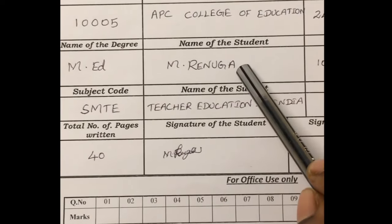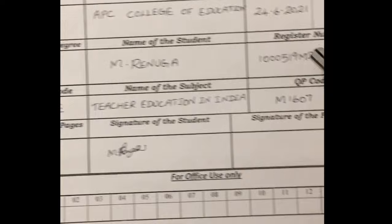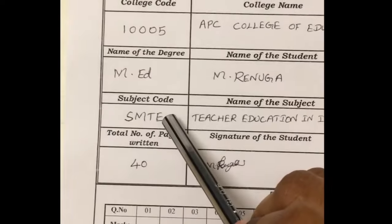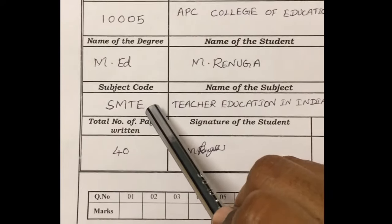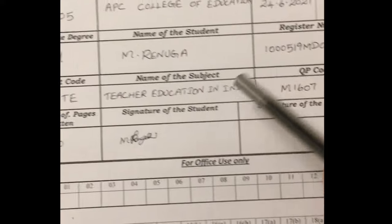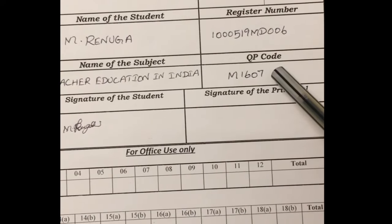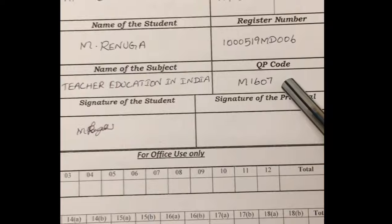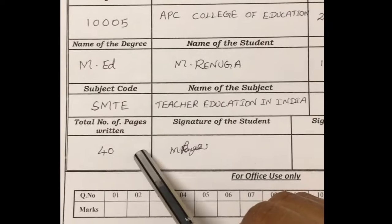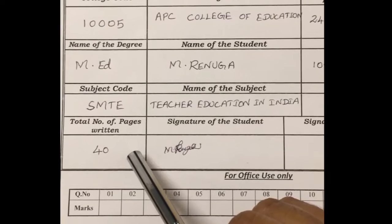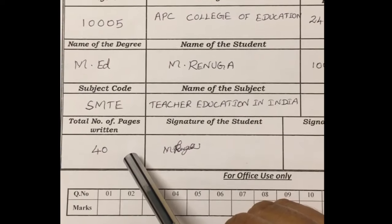Then write your name with initial, then write your register number which is in your hall ticket. Then write your subject code, next write your subject name, then write the question paper code which is in your question paper.